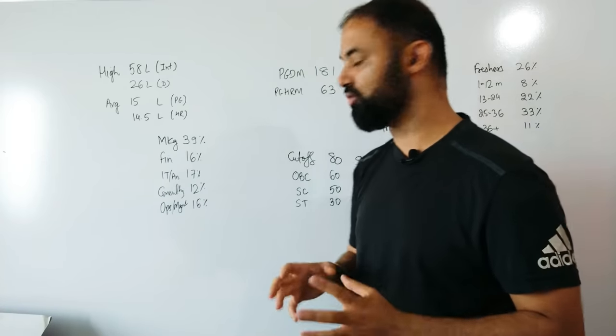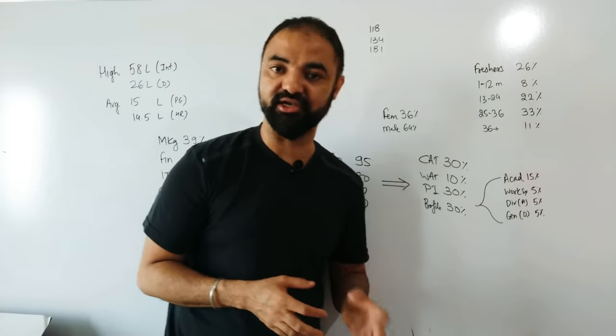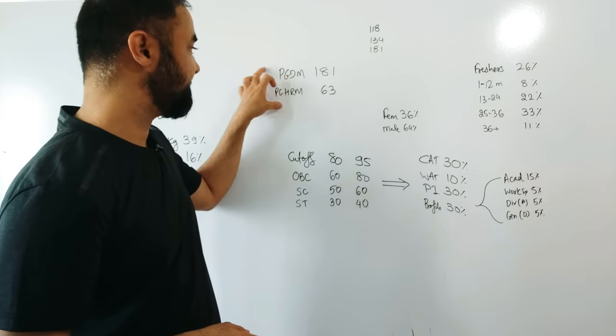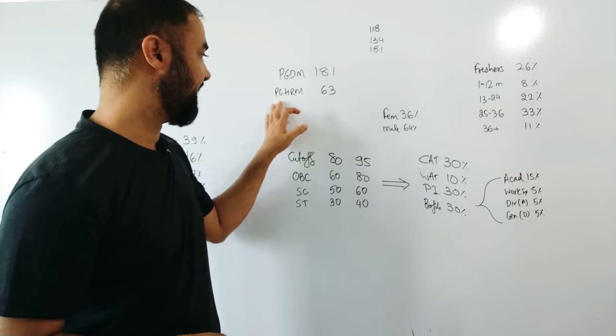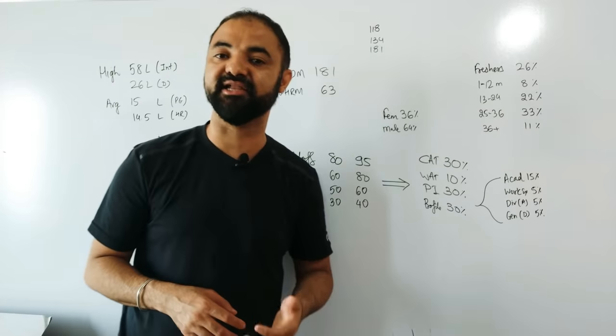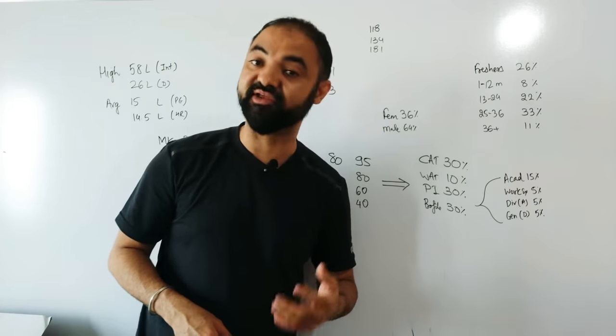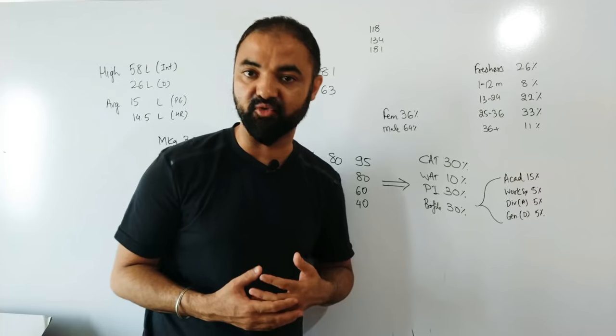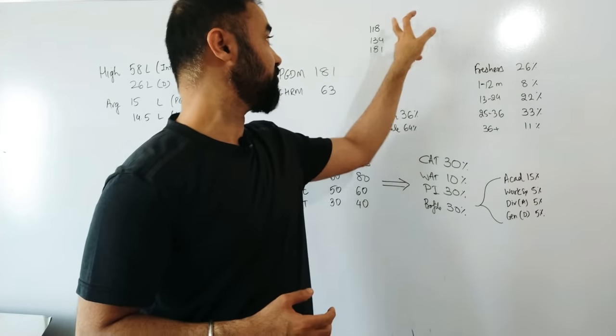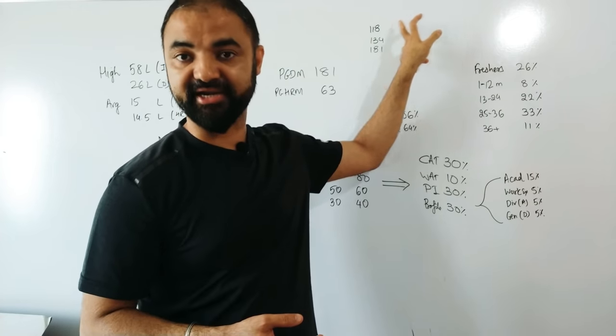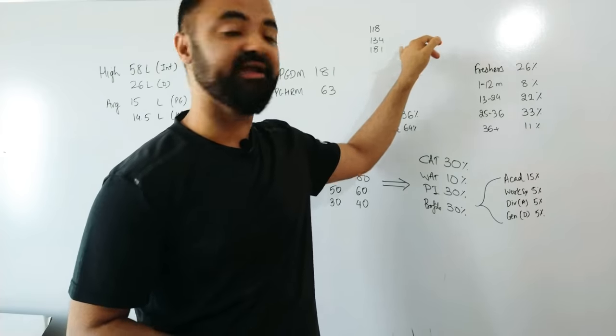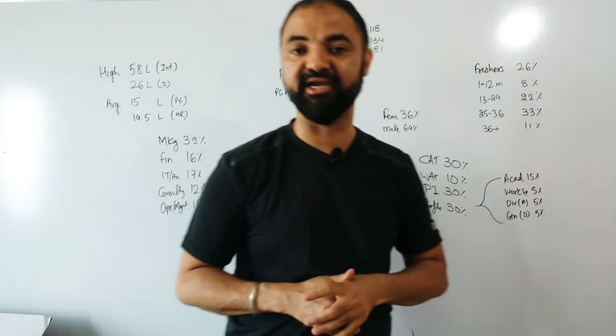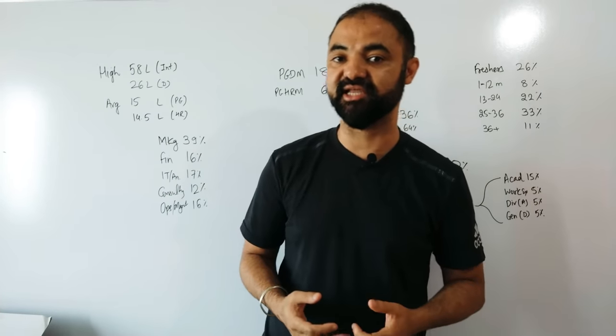Looking at the in-depth breakup: PGDM has 181 seats and HR has 63 seats. The number of seats is increasing because they've gained confidence that they can get more people and place them. Last year was 118 students, increased to 134 this year, now 181. This means the college is gaining confidence.